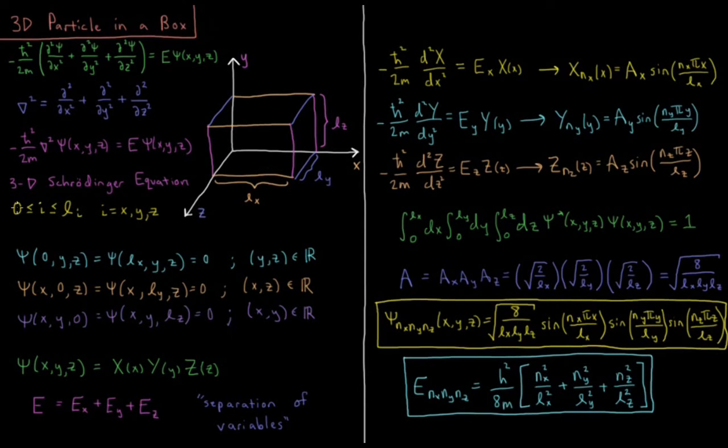In each dimension, we have zero is less than x, y, or z, which is less than the length of the box in that dimension. So our boundary conditions are going to be that psi of zero for all values of y, z, and psi of Lx for all values of y, z equals zero, y and z being all real numbers of y and z.